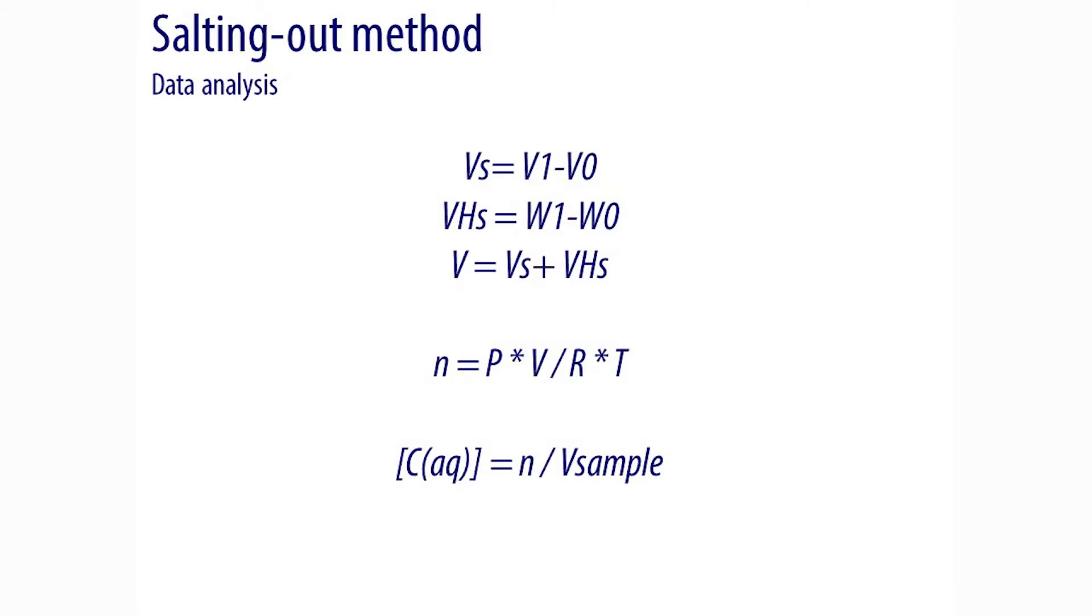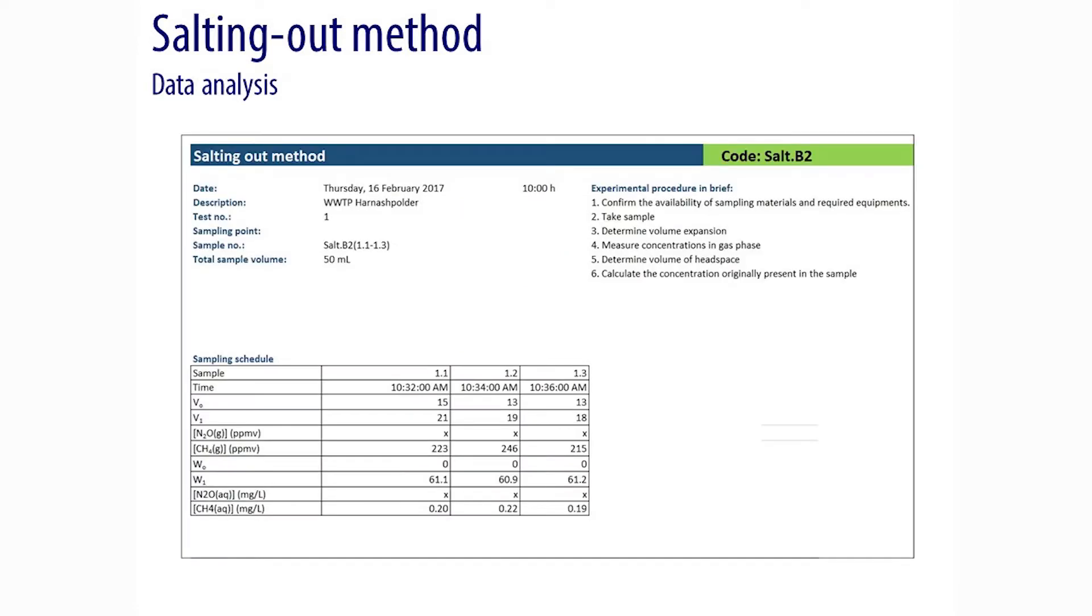The volume of the gas stripped out, Vs, is computed with the first expression as the difference between the initial and final volumes in the syringe. The volume of the headspace, Vhs, is estimated as the difference between the weights before and after filling the serum bottle up to the top.